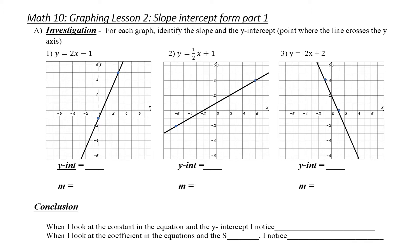Okay, so I gave you some points to work with. Looking at my first graph, number one: y equals two x minus one. My y-intercept is the point where it crosses the y-axis, which is negative one. My slope — in order to find slope, I need rise over run, so I've given you two points. When I calculate my rise and my run, I get six over three, which I can reduce to two, or two over one. Now, look at the equation — do you see where the y-intercept could be? Do you see where the slope could be?